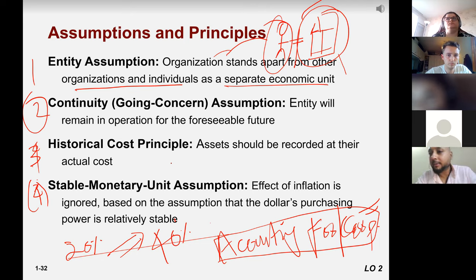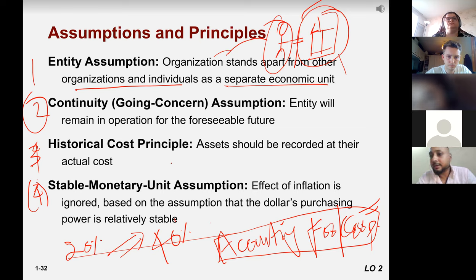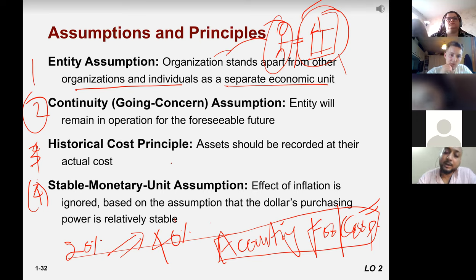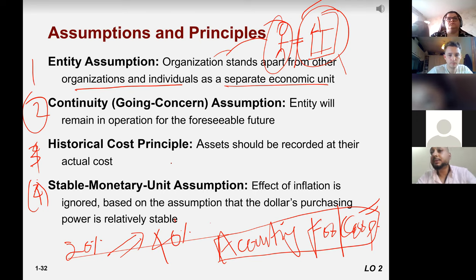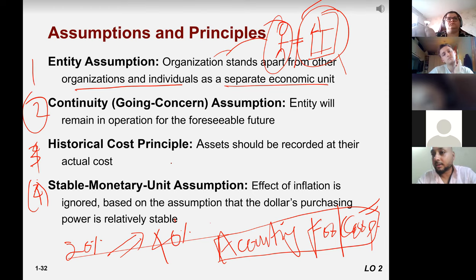For example, you bought land at one million dollars in 2010. Now in 2022 there is a recession and the value of the land decreases to 0.5 million — you cannot reduce the value to 0.5, you write it down as 1 million. After some time maybe it increases to 20 million, but you will always write it at the historical cost.